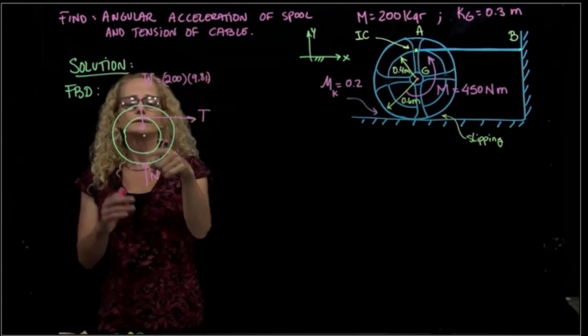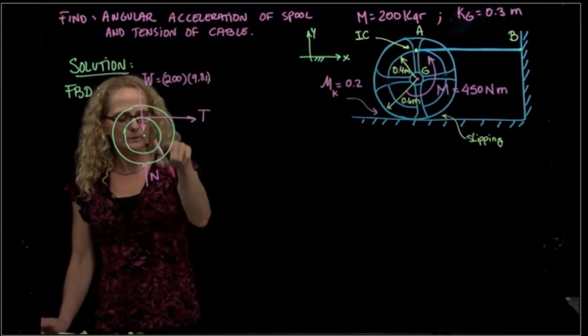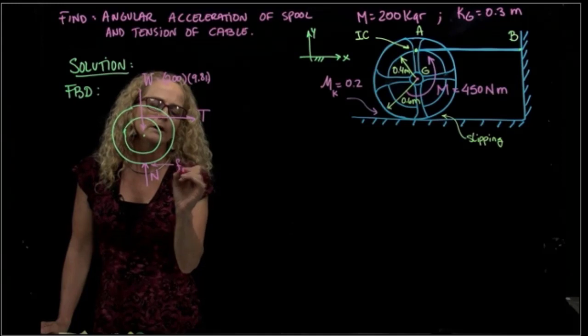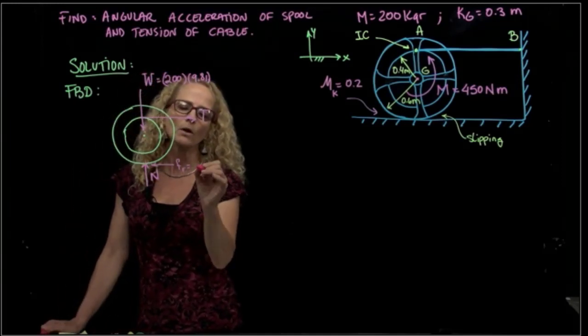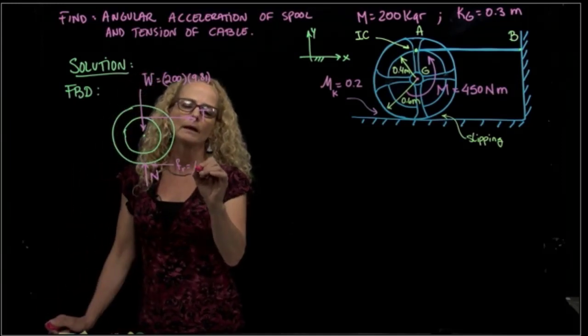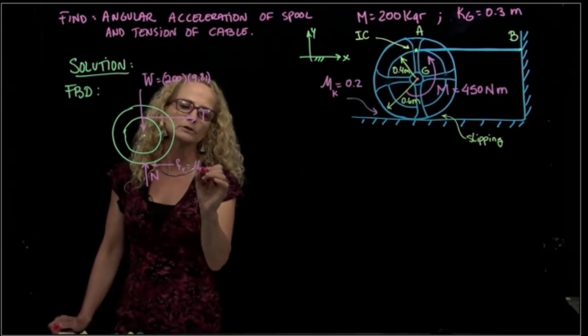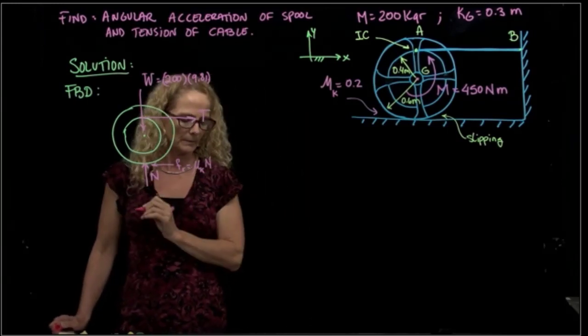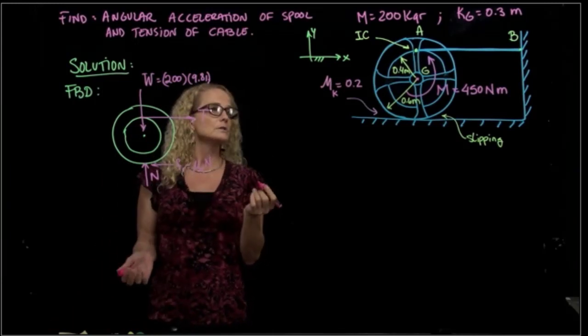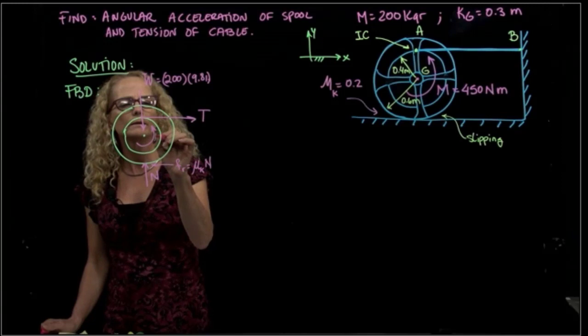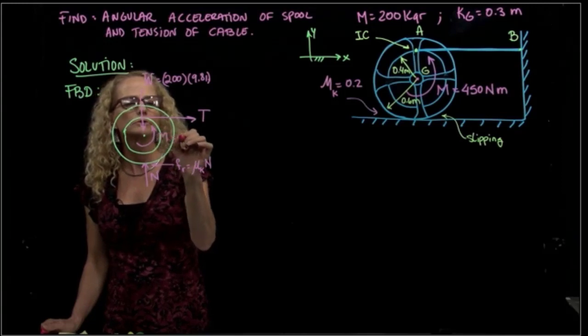We have the weight, and the weight is 200 kilograms times the gravity. And then we have, since we said that this is trying to move in that direction, a friction force. And the friction force, as you recall, when we are slipping, is the kinetic coefficient of friction times the normal. And then we have also a moment that is being applied, the moment that is known.